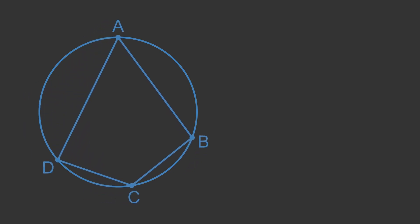The theorem says that the opposite angles of a cyclic quadrilateral add up to 180 degrees. This means that angles A and C add up to 180 degrees, because A and C are opposite corners. It also means that angles B and D add up to 180 degrees, because B and D are opposite corners.